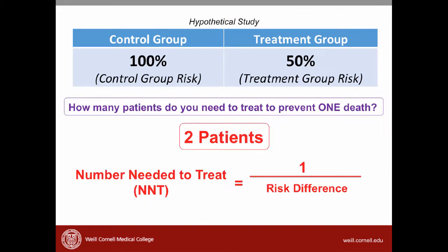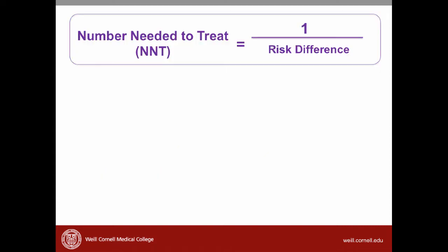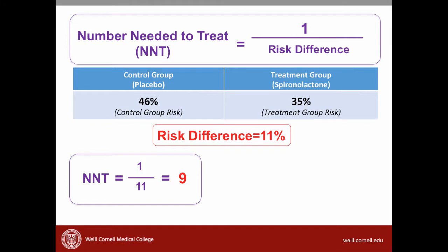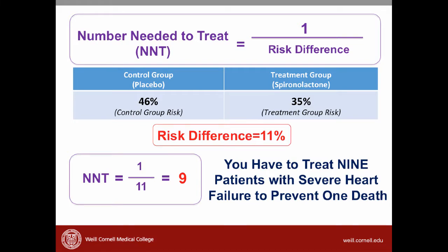Another value that helps us interpret results is the number needed to treat (NNT) — the number of patients we need to give the treatment to in order to prevent one death. To understand NNT, consider a hypothetical example where the control group risk is 100% and the treatment group risk is 50%. How many patients do you need to treat to prevent one death? The answer is two patients. The formula for NNT is simply 1 divided by the risk difference. In the spironolactone study, the risk difference is 11%, so the NNT is 1 over 0.11, which is 9 patients.